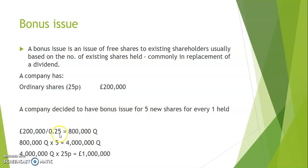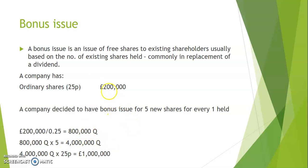To work this out, step one: work out how many shares we have. We have £200,000 worth of shares at 25p per share, so we have 800,000 shares in issue. Step two: we're giving five new shares for every one held — so 800,000 times five gives us four million new shares. A bonus issue is always done at the nominal value, so 4 million shares at 25p equals £1 million.